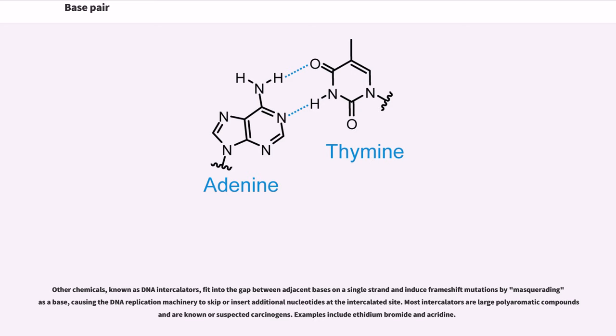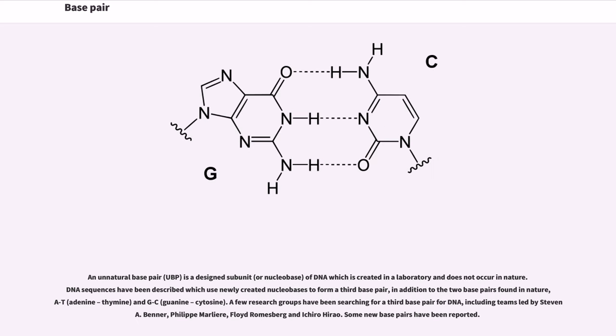An unnatural base pair (UBP) is a designed subunit, or nucleobase, of DNA which is created in a laboratory and does not occur in nature. DNA sequences have been described which use newly created nucleobases to form a third base pair, in addition to the two base pairs found in nature: AT (adenine-thymine) and GC (guanine-cytosine). A few research groups have been searching for a third base pair for DNA, including teams led by Steven Benner, Philippe Marlier, Floyd Romesberg, and Ichiro Hirao. Some new base pairs have been reported.